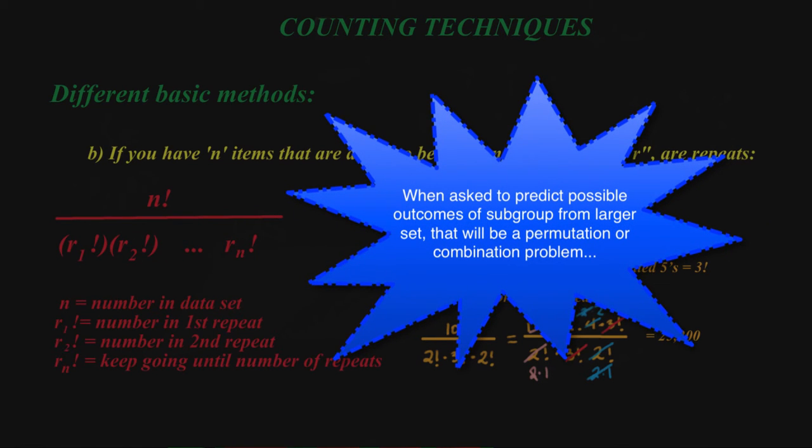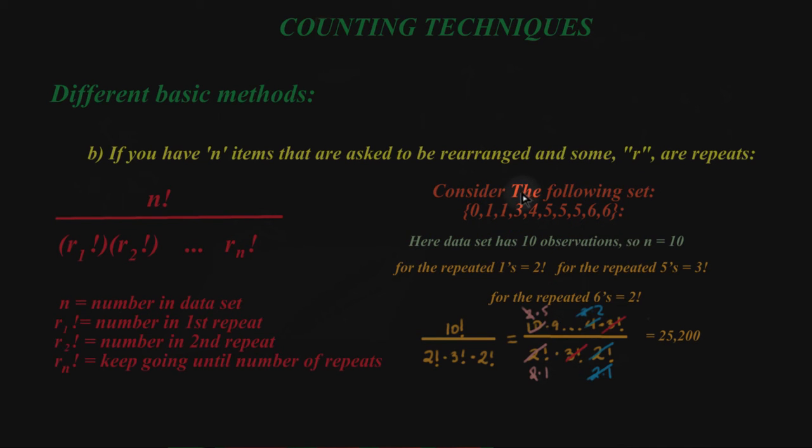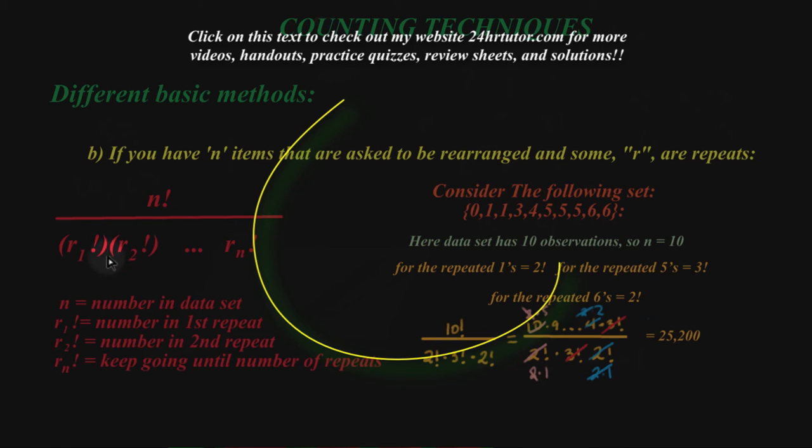It does get a little bit more complex with combinations and permutations. What you have to take into account there is we're going to be looking at a larger group, and we're going to try to arrange a smaller subgroup of the larger group. That's what permutation combinations deal with. And that's a whole different video, so make sure you practice the fundamentals before you go to more complex stuff, and check out the example videos.